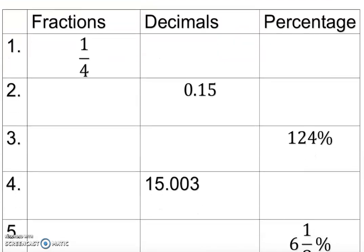Let's take a look at how we can convert in between. Number one: the fraction is given and the decimal is missing. We know one quarter is 25 cents, so it's 0.25. We move the decimal two places to the right, and it gives us 25 percent.